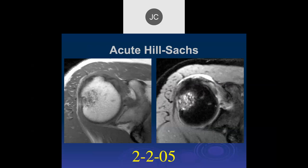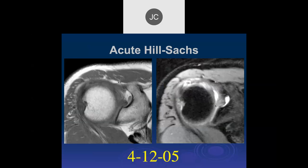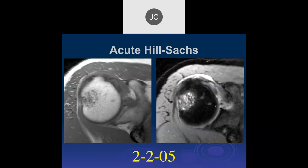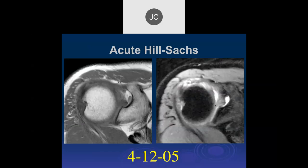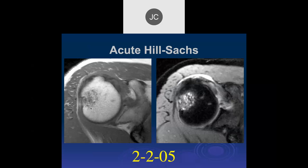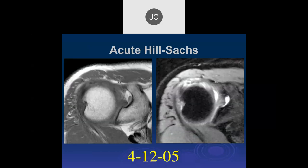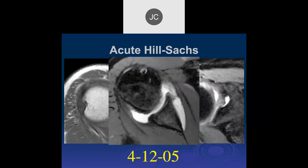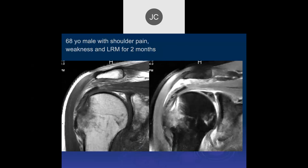An acute Hill-Sachs shows edema in the superior posterior aspect. Two months later there's reduced edema within the humeral head — there's still a cortical defect, that V-shaped configuration. In the acute stage there's acute edema, and within weeks it resolves. A little blunting of the anterior labrum with increased signal intensity but no discrete displaced tear visible at two months.